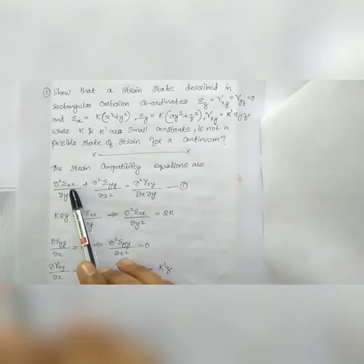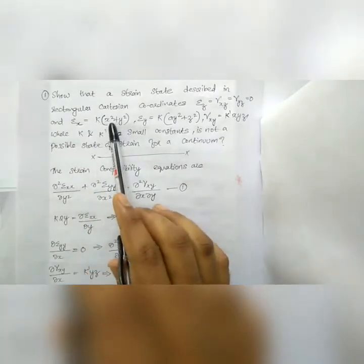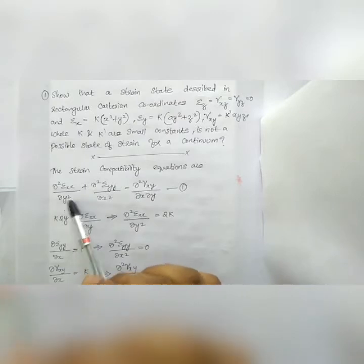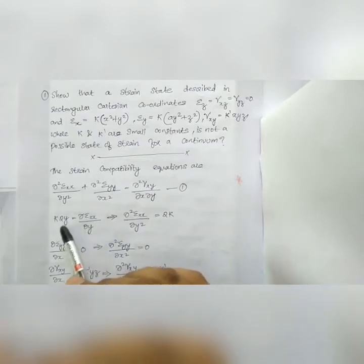For the first strain compatibility equation, we compute ∂²εxx/∂y². Epsilon_x is k(x² + y²). Taking partial differentiation with respect to y: the k·x² term gives 0, and k·y² gives 2ky. So ∂εxx/∂y = 2ky. Taking the second partial differentiation with respect to y, ∂²εxx/∂y² = 2k.